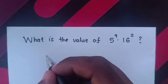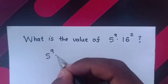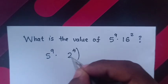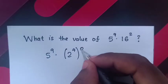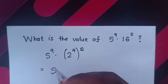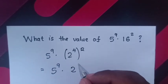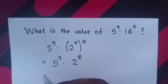So here, 5^9 times 16 is the same as 5^9 times (2^4)^2. It will be equal to 5^9 times 2^(4×2) which is 2^8.